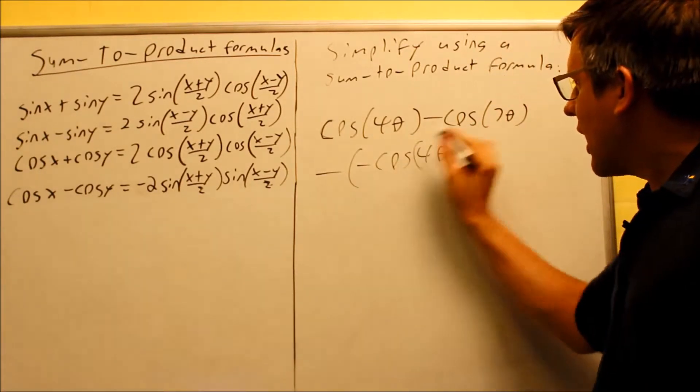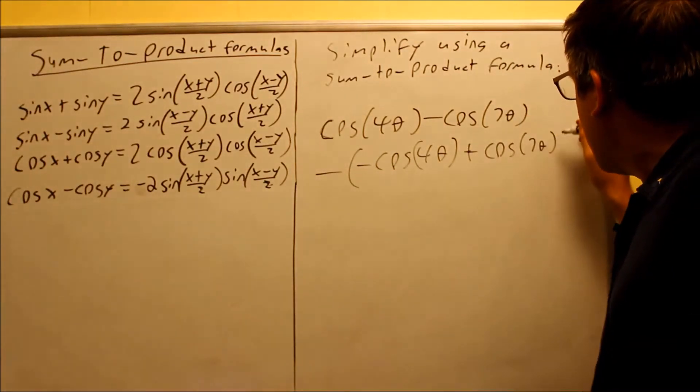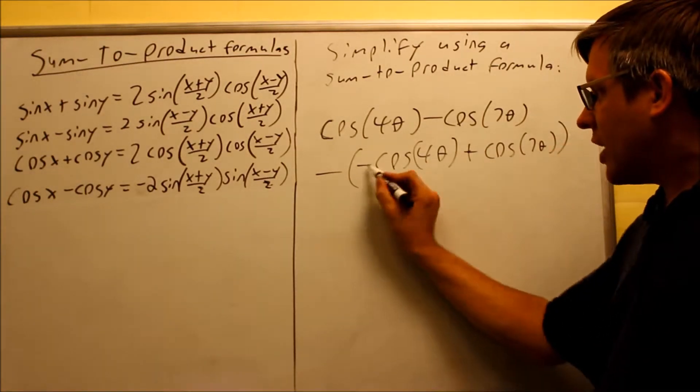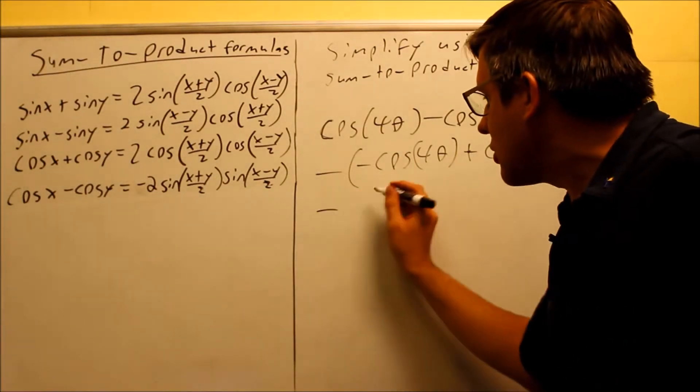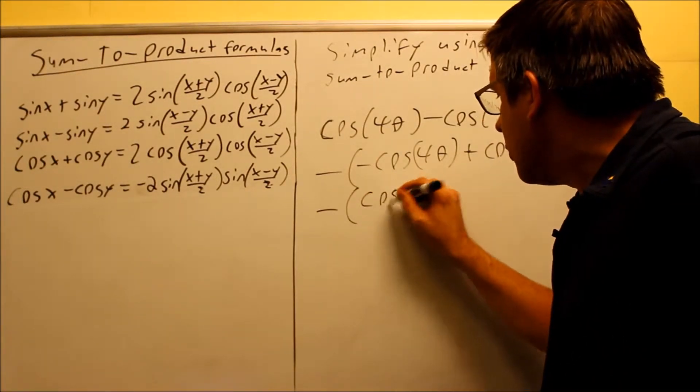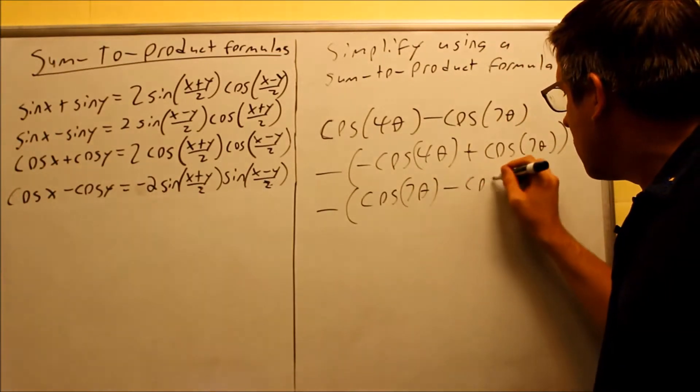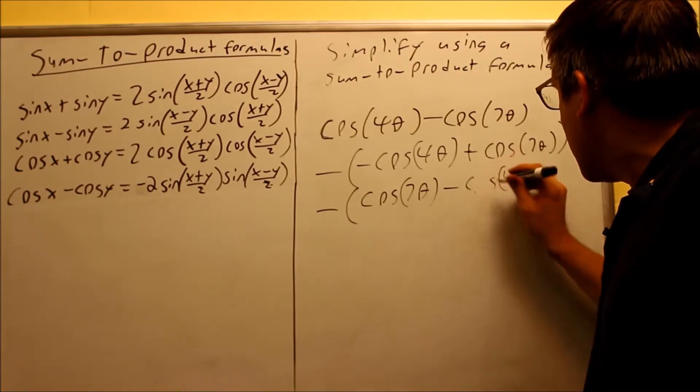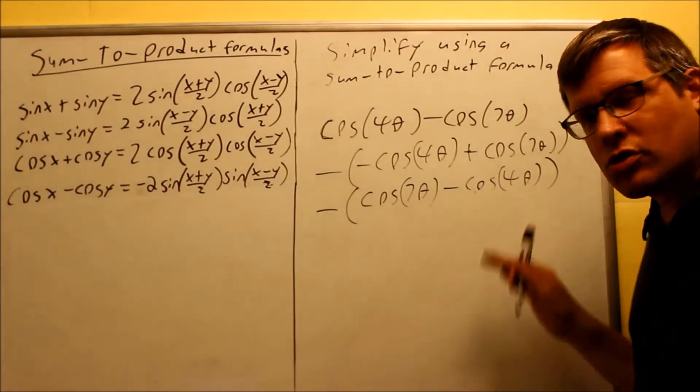Taking out a negative we get negative cosine 4 theta. That's going to make that, if I take a negative out of a negative that makes it a plus. So then I get cosine 7 theta. So by doing that I've taken out a negative and now I have this. The only reason why I want to do that is because this allows me now to switch the order. Cosine 7 theta minus cosine 4 theta. So by taking out a negative you can always, that allows you, by factoring out a negative you can switch the order.